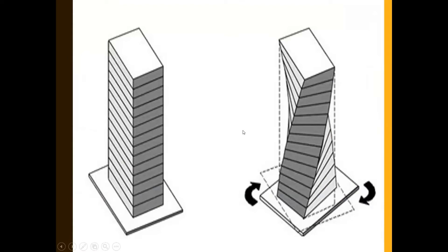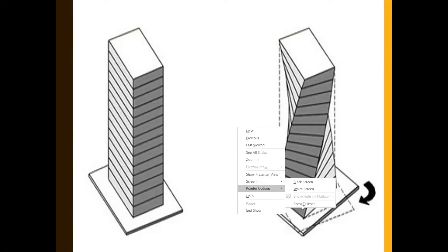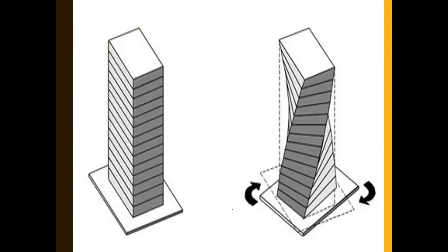Let me show you with the pointer — you can see this direction and that direction, showing the rotation that occurs. This twisting occurs when there is ground movement during an earthquake, causing torsion in the building. That is why we must study the effect of torsion on buildings, and understand this basic terminology.